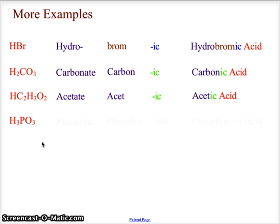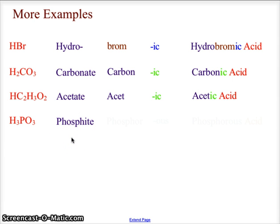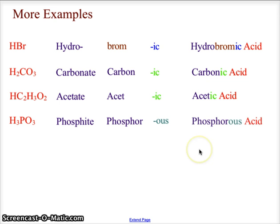Last example: H3PO3 — go ahead and write out what you think the name is. This is an oxy acid because of the O3 in the polyatomic, which belongs to the phosphite ion. We use the root 'phosphor' for phosphorus, and since it ends in '-ite' we use the '-ous' suffix, giving us phosphorous acid. Hopefully you now have the basics of naming both binary and oxy acids.